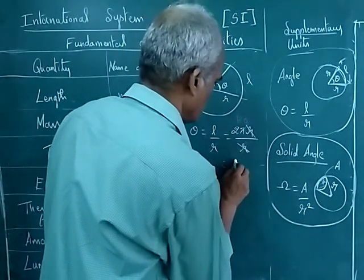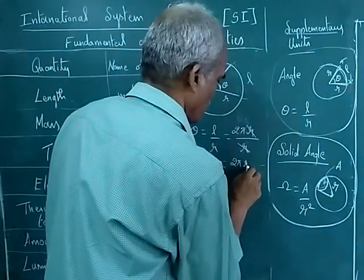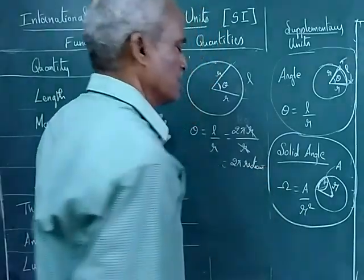So total arc length will be 2 pi R divided by R radius. Now these two will get cancelled. Therefore, for a circle, the angle is 2 pi. We say 2 pi radian. So the answer is 2 pi radian.